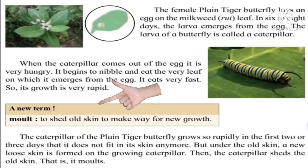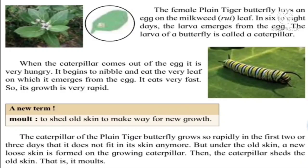Here we are learning another word: molt. We already learned terms like hatch and metamorphosis, and now we have molt. To shed old skin to make way for new growth is called molt. Because the caterpillar grows and becomes fat, the skin is no longer comfortable — it becomes tight. So under the old skin, a new skin forms, and the caterpillar sheds the old skin. That is, it molts — it throws out the old skin and gets a new skin. This is called molting.